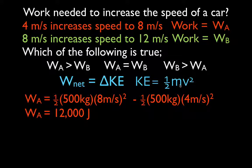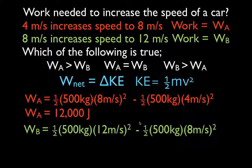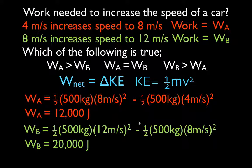Now let's calculate the work needed to increase the car's speed from 8 to 12 meters per second. Work B equals one-half times 500 times 12 squared, minus one-half times 500 times 8 squared. In order to go from 8 to 12, we actually have to do 20,000 joules of work — significantly more.